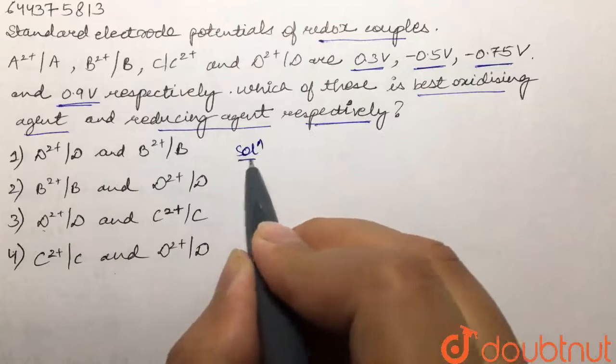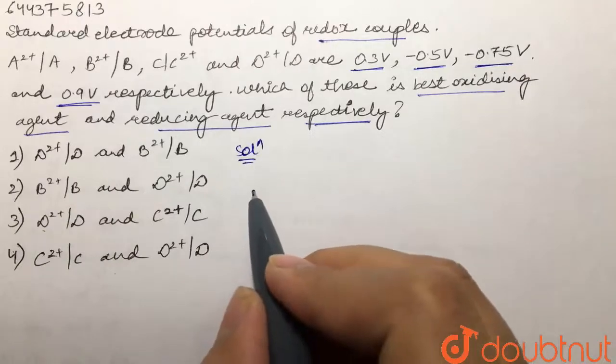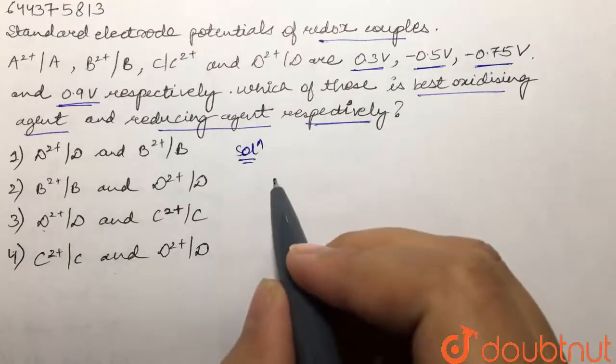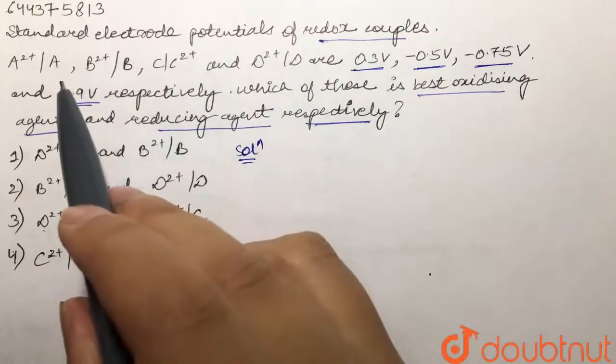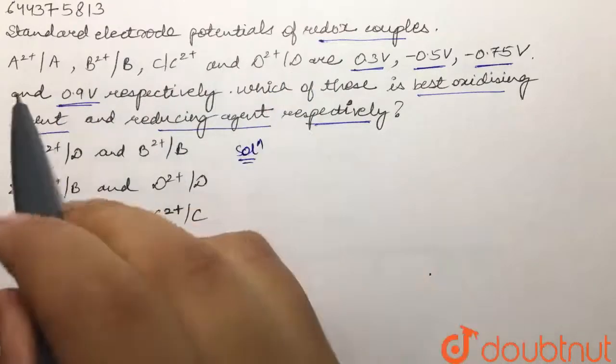We are given four couples and we are supposed to find out the best oxidizing and best reducing agent from these. So first of all, we are going to write down the reactions of these redox couples.